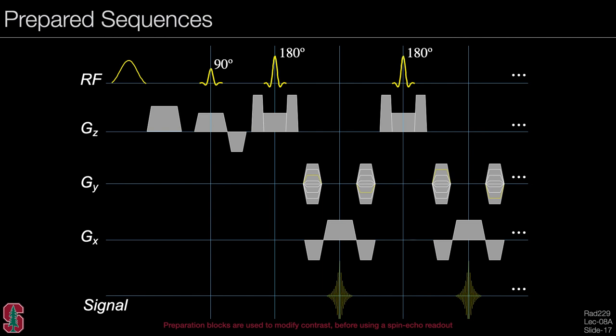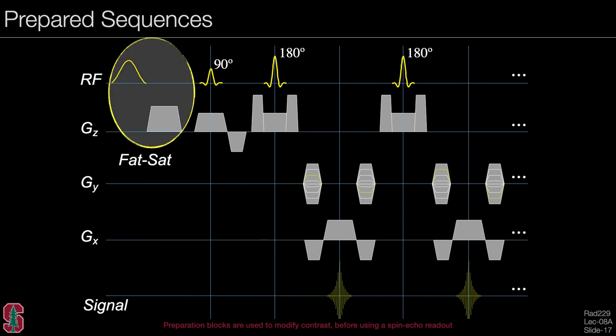A final concept for this lecture is prepared sequences. Here, fat saturation is performed first, which alters the contrast from other contrast mechanisms, and then a spin echo train readout forms the image. This is desirable because the spin echo is a very robust way to form the image, but sometimes we want to manipulate the contrast further. There are other examples of contrast preparation that we will see later.